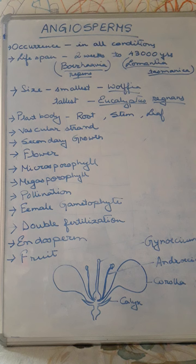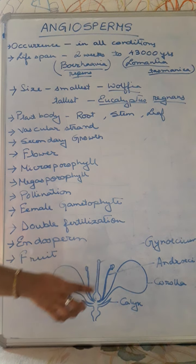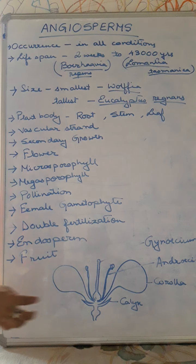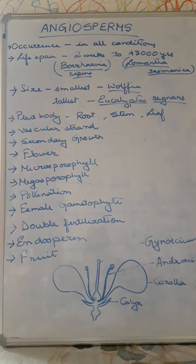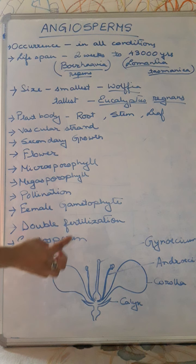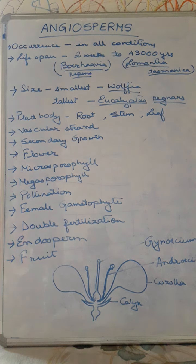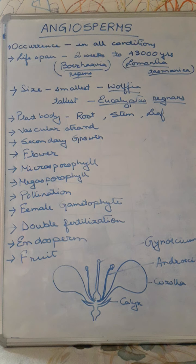The flower is the main reproductive structure of angiosperms. As you can see in the diagram, it consists of four whorls — these are the main reproductive and accessory whorls: calyx, corolla, androecium, and gynoecium. The calyx is the green part, corolla is the colorful part, and their basic function is to protect the essential whorls. Androecium is the male reproductive part and gynoecium is the female reproductive part.